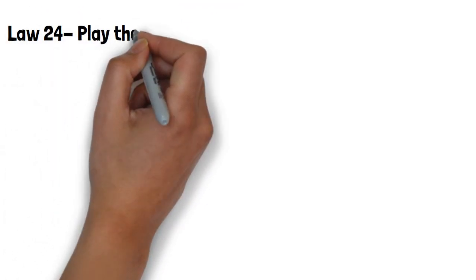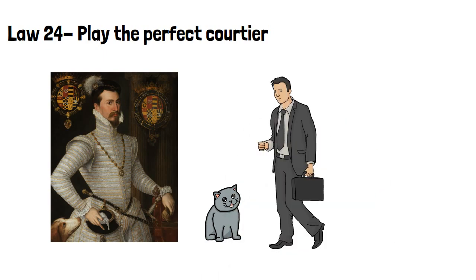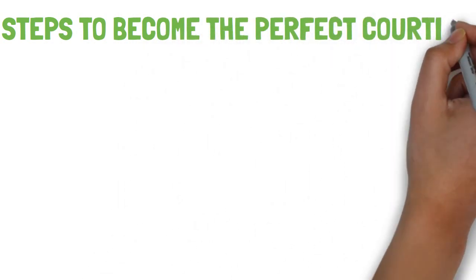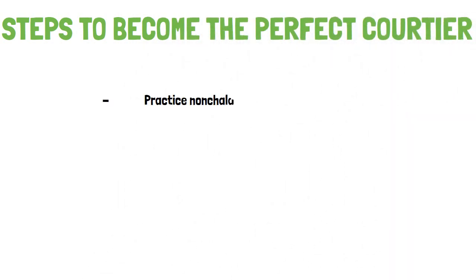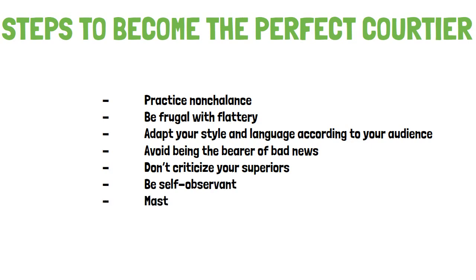Law 24, play the perfect courtier. The courtier uses power through careful means, by flattering and yielding to their superiors, and only enforcing their power through grace and charm, they gradually accumulate an ever-increasing amount of power. There are many steps you can take to become the perfect courtier, and they involve the following. Practice nonchalance. Be frugal with flattery. Adapt your style and language according to your audience. Avoid being the bearer of bad news. Don't criticize your superiors. Be self-observant. Master your emotions and be a source of pleasure.